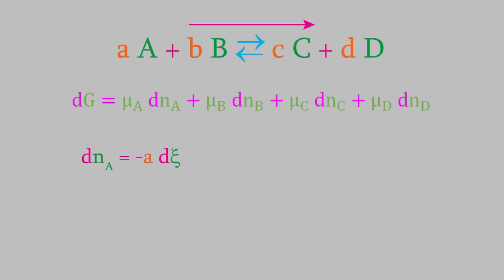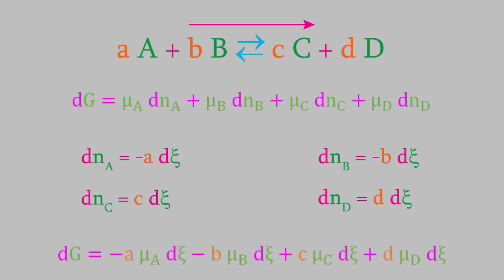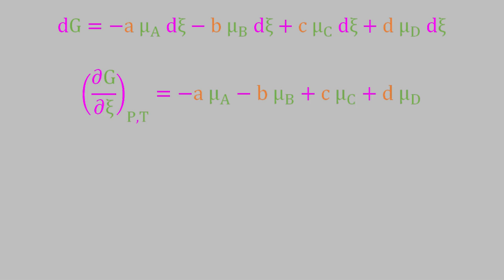Similarly, the change in the moles of B is negative b times dξ. And the changes in the moles of C and D are positive c or positive d times dξ. If we plug those into our equation for the change in the Gibbs free energy, here's what we get. I'll simplify this a bit by dividing the whole equation by dξ. That gives us a partial derivative on the left side. And on the right side, I'll rearrange the terms a bit so that we're not starting with a negative sign anymore. That partial derivative on the left side is just the change in the Gibbs free energy over the course of the reaction. In other words, it's ΔG.